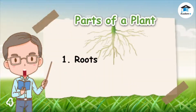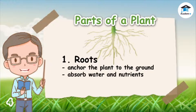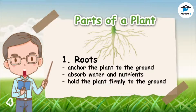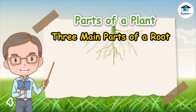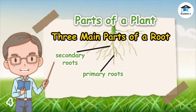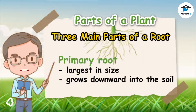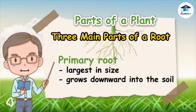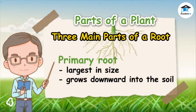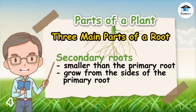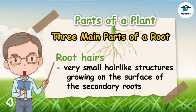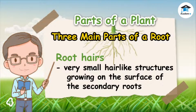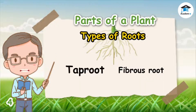The roots grow under the soil. They anchor the plant to the ground, from which they absorb water and nutrients. They also hold the plant firmly to the ground. The roots have three main parts: primary roots, secondary roots, and root hairs. The primary root is the largest in size and grows downward into the soil. Secondary roots are smaller than the primary root and grow from the sides of the primary root. The root hairs are very small, hair-like structures growing on the surface of the secondary roots.